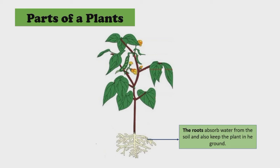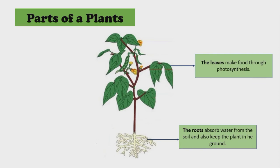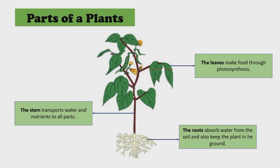How about this part? The leaves make food through photosynthesis. How about this part? This is the stem. The stem transports water and nutrients to all parts of the plant.